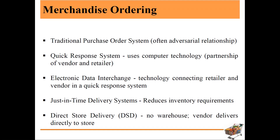Then there is the Just-in-Time (JIT) delivery system, where we reduce inventory requirements. If I need something next week, I order on Friday, the product arrives by Sunday, and we start selling on Monday — that is just in time. Then there is direct-to-store delivery: no warehouse, the vendor delivers directly to the store and it goes directly to sales.